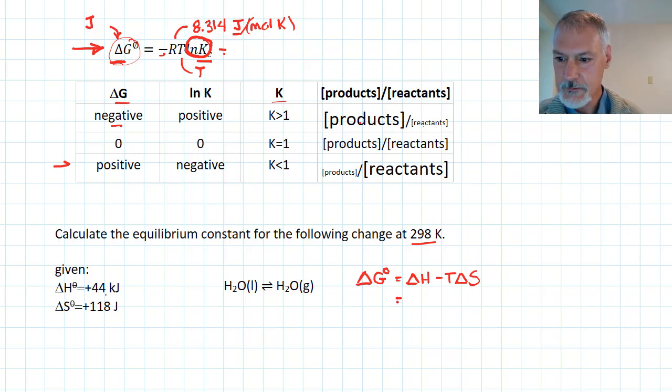So, putting in my values, now, again, I'm going to want this in joules. As you can recall up here to work, it works best if I do that. So, I'm going to take that 44 kilojoules and multiply it by 1,000. So, that represents my delta H term minus T and times my change in entropy.